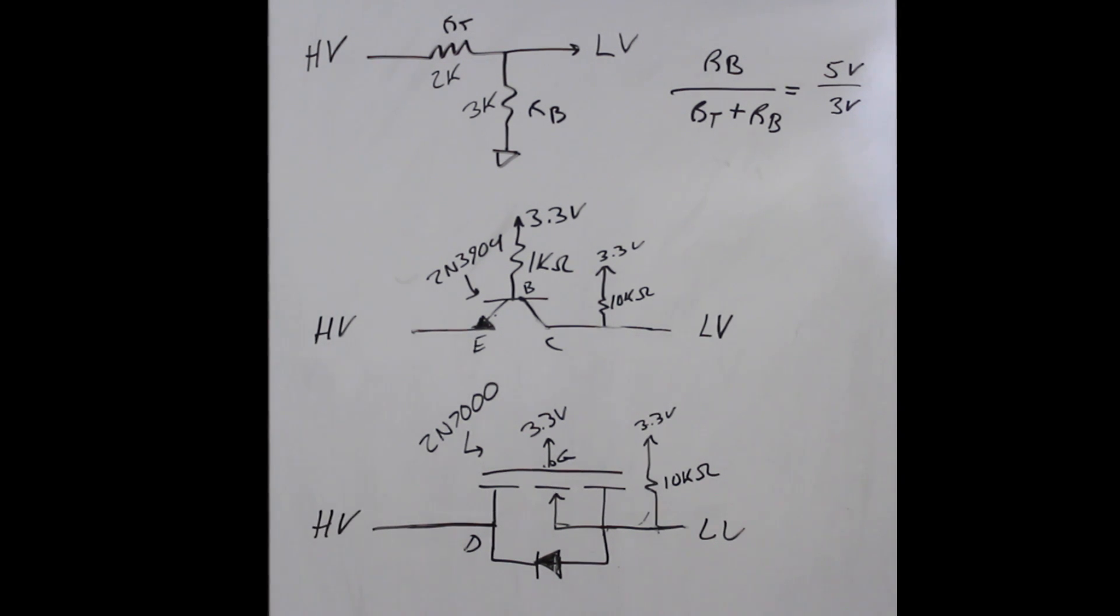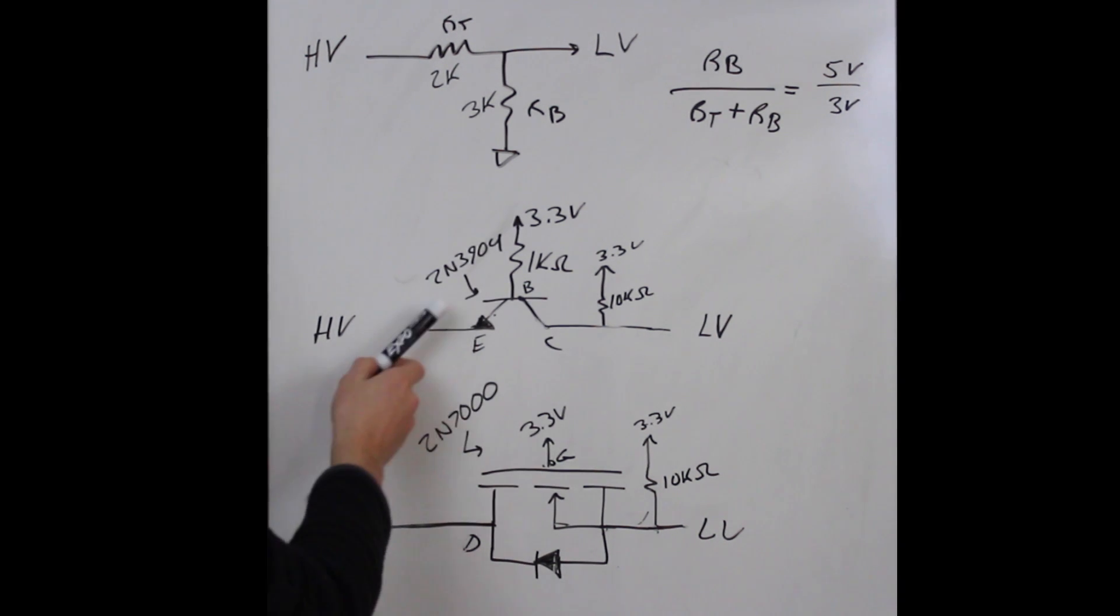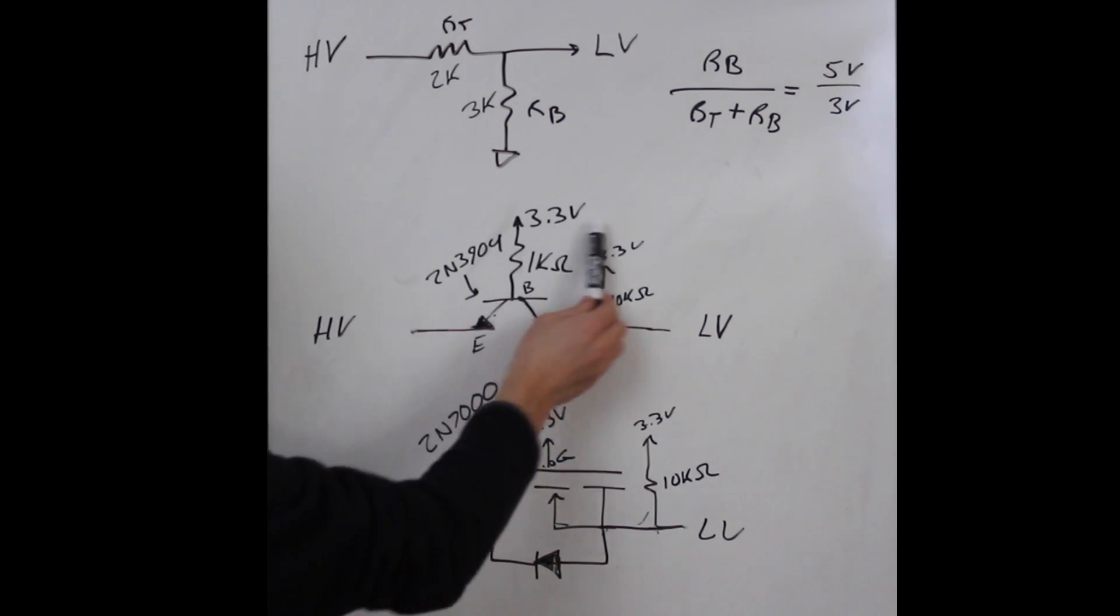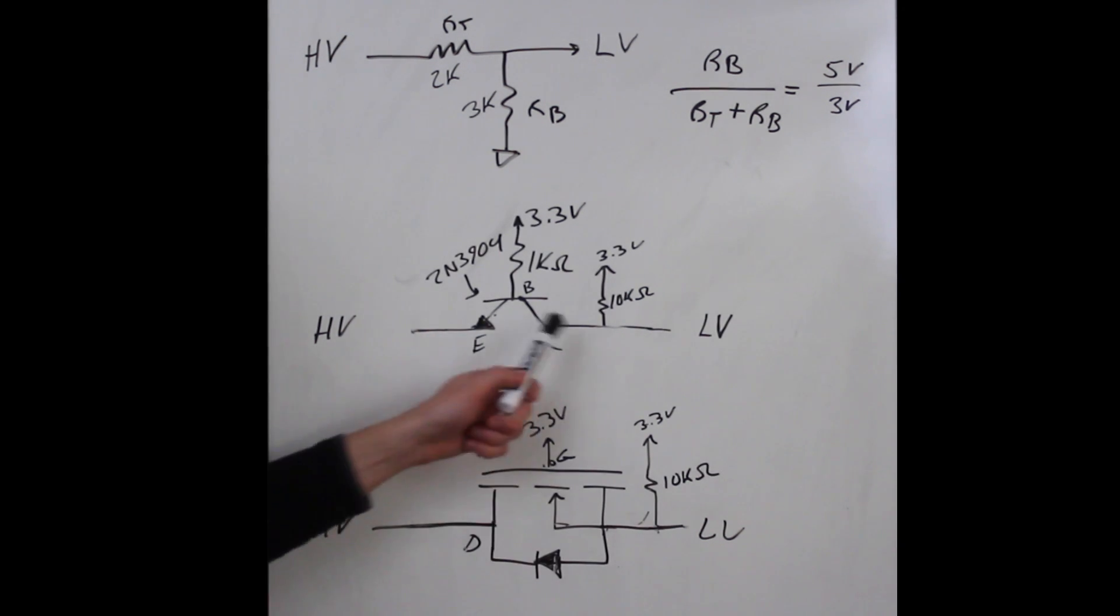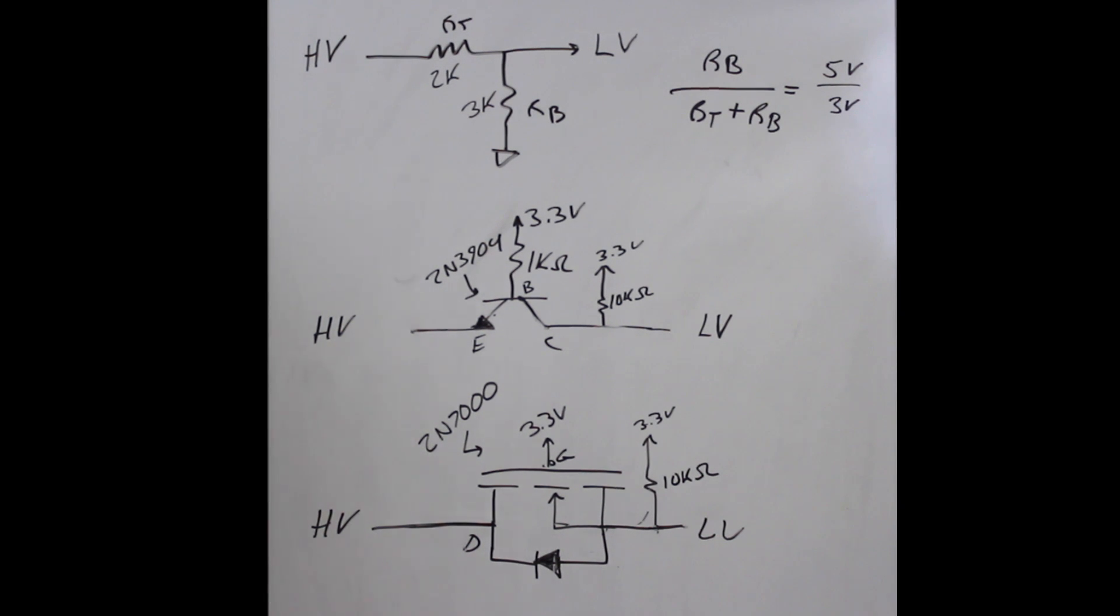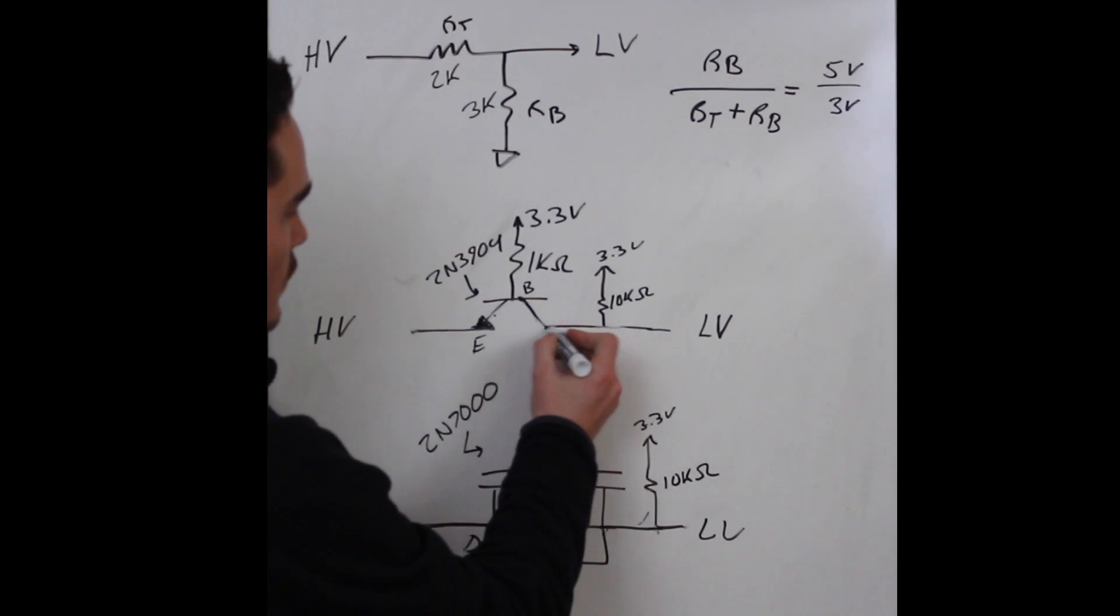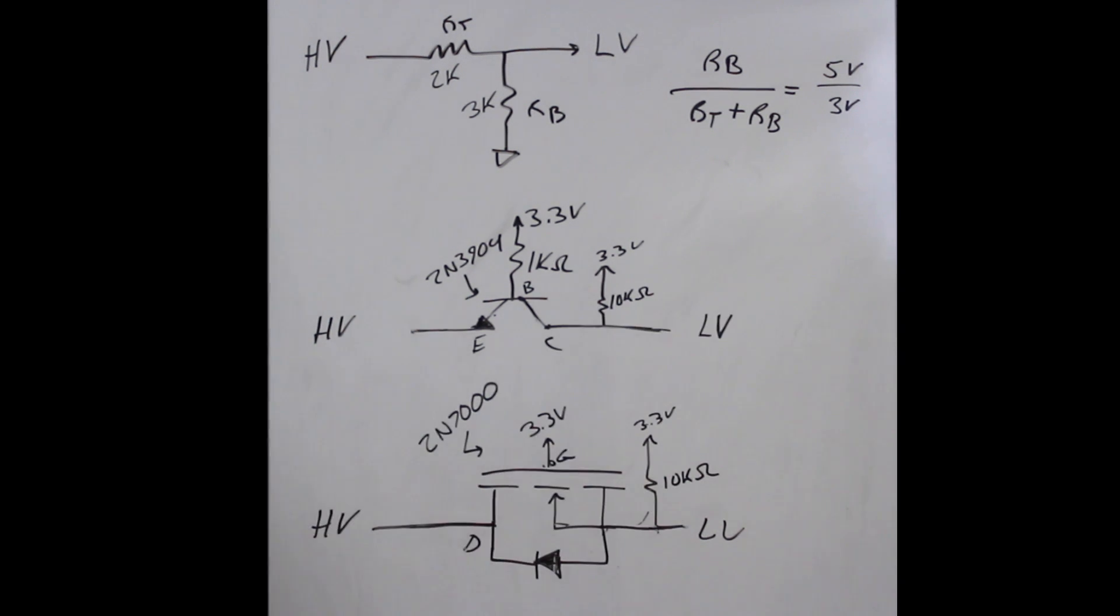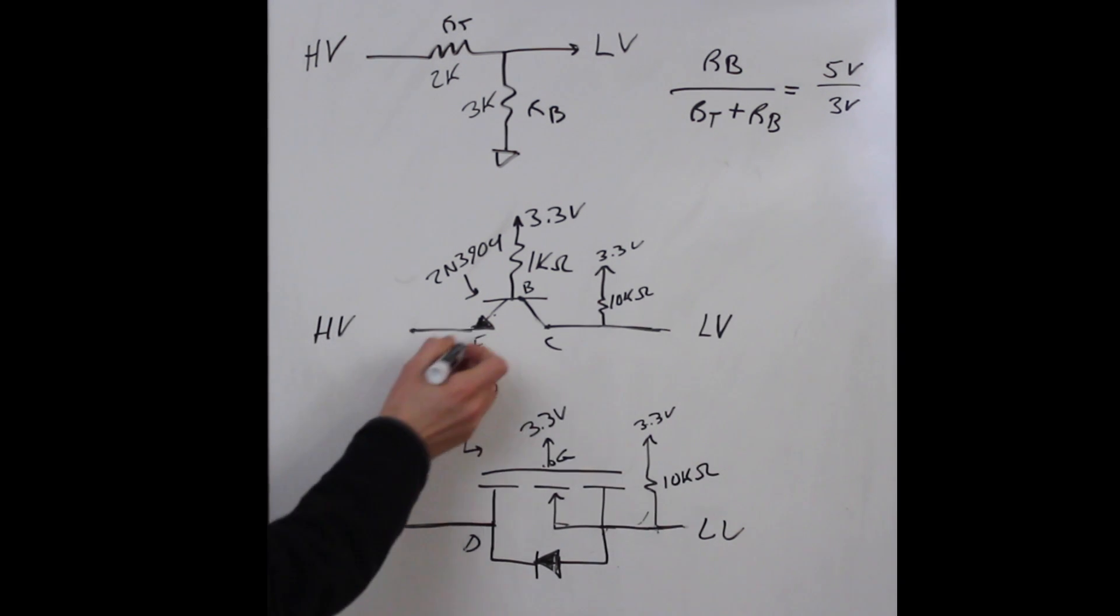I rarely if ever use that technique to level shift. I use this one all the time - an NPN transistor based level shifter. The circuit I have on the breadboard uses a 2N3904 with the base pulled up via 1k ohm resistor to 3.3 volts and the collector pulled up with 10k to 3.3 volts as well.